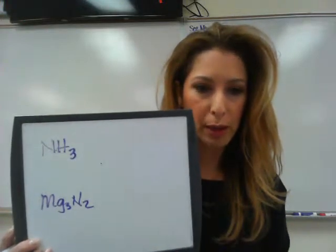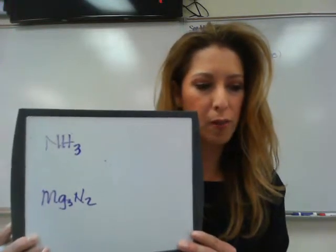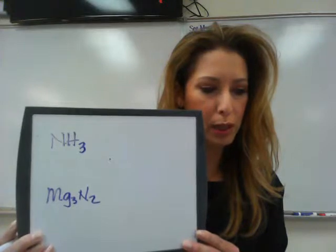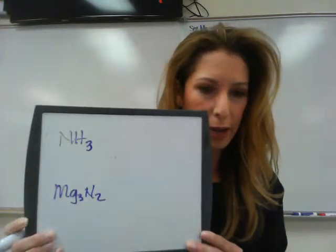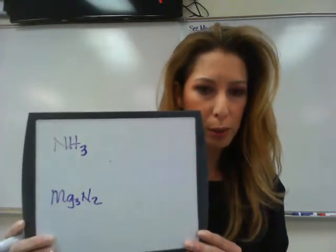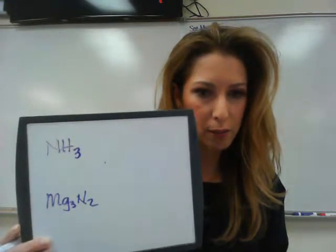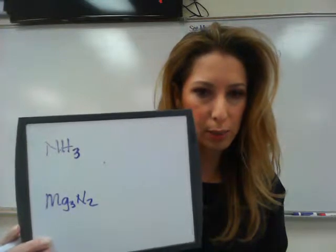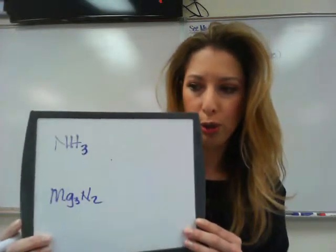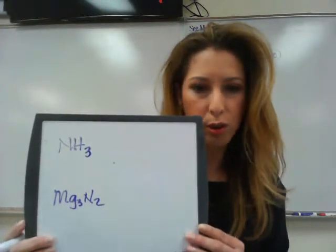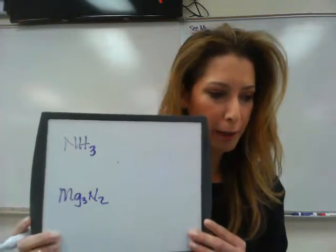MG3N2 has a metal, which is magnesium, and nitrogen, which is a nonmetal. That means it will be held together by ionic bonds. So covalent bonds are when we share valence electrons between nonmetals, and ionic bonds are when we transfer valence electrons from a metal to a nonmetal.